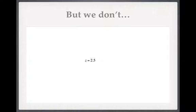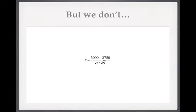But what happens if we don't know the population standard deviation? We can plug in what we know: the consultant's average estimated blood loss, the population average of 2750, and sample size 9. But what we're missing is the population standard deviation. So we're stuck — we can't work out a Z value and can't proceed with our statistical test.